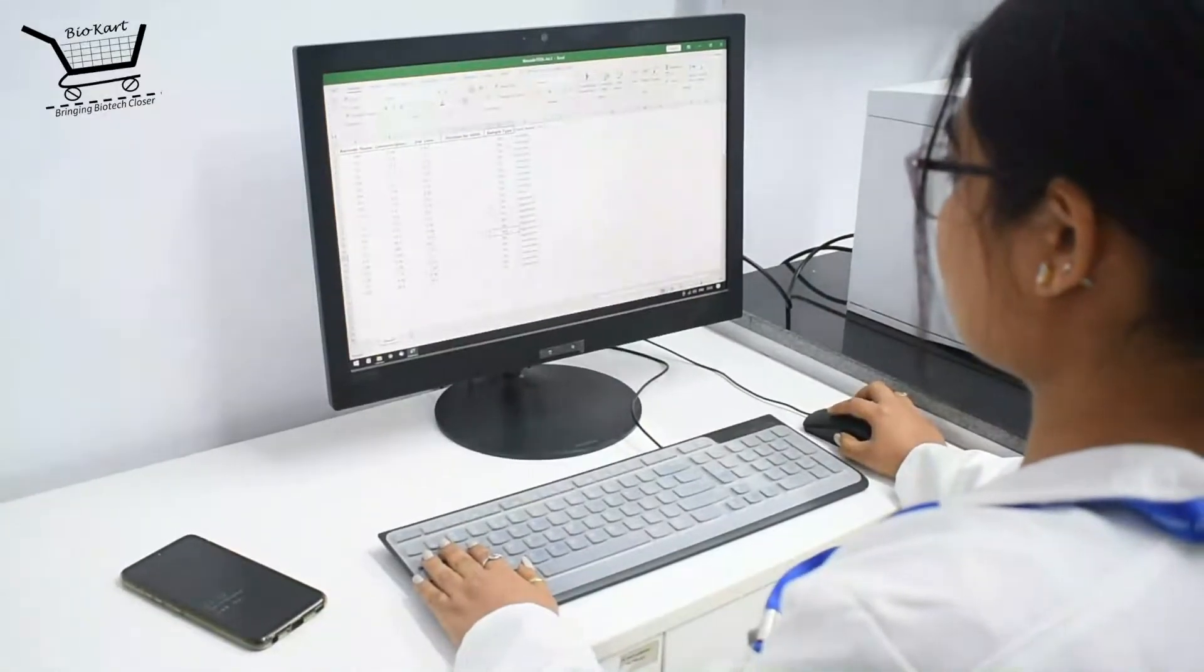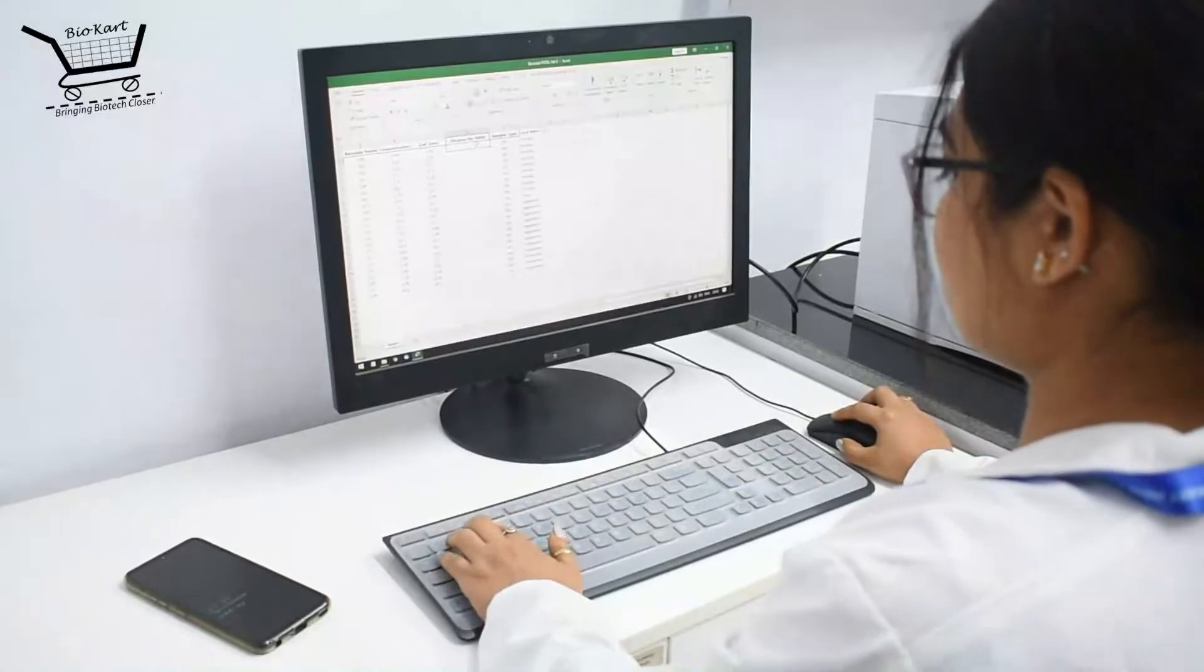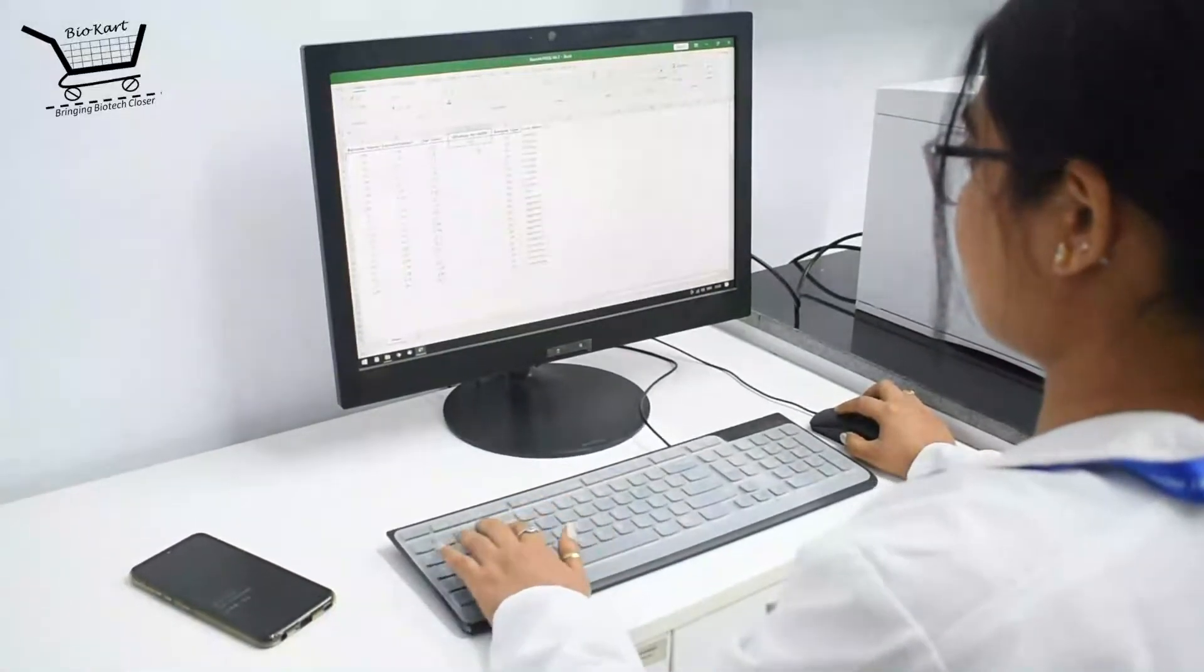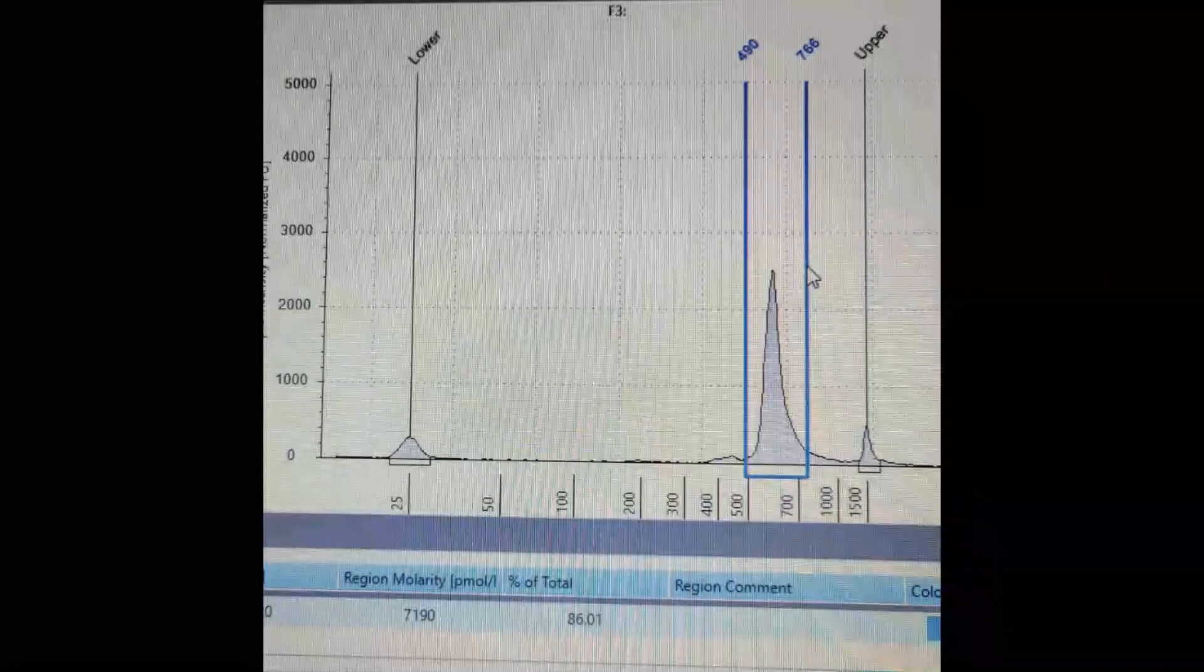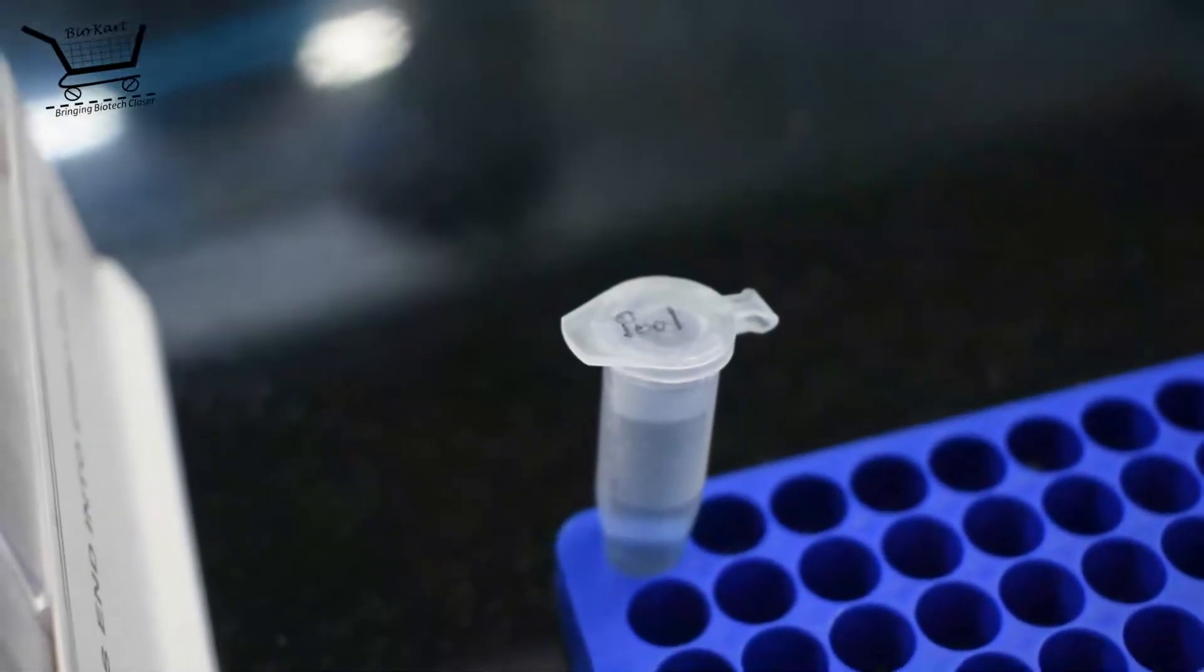Once the libraries for a particular run is prepared and quality checked, we proceed to the final step before sequencing. Individual libraries are pooled together at a concentration of 10 nmol per microlitre. The final library is again subjected to a final bioanalyzer check.